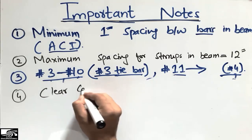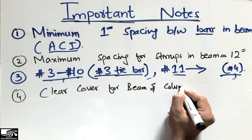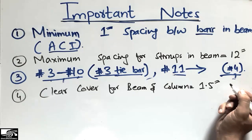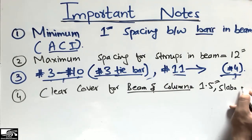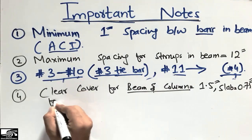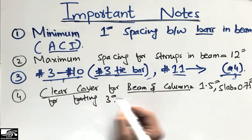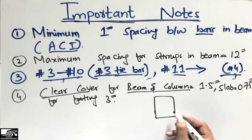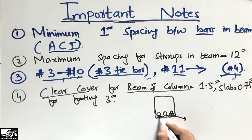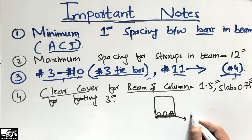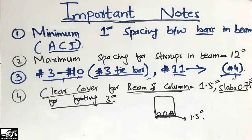The fourth point is clear cover. The clear cover for beams and columns should be a minimum of 1.5 inches. For slabs, we provide 0.75 inches, and for footings, the clear cover is 3 inches. Clear cover is the distance by which the reinforcement is covered inside the concrete. So in a beam, this cover distance from the reinforcement to the outer surface should be 1.5 inches.